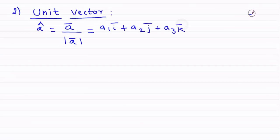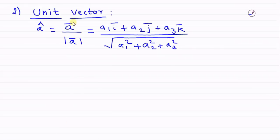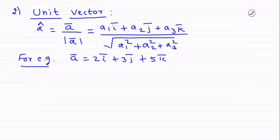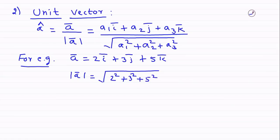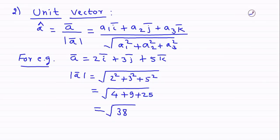Suppose a-bar = a1·i + a2·j + a3·k; its magnitude is √(a1² + a2² + a3²). For example, if a-bar = 2i + 3j + 5k, then the magnitude is √(2² + 3² + 5²) = √(4 + 9 + 25) = √38.